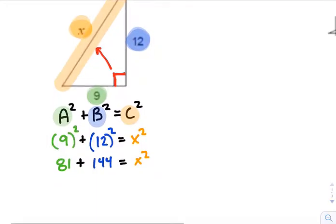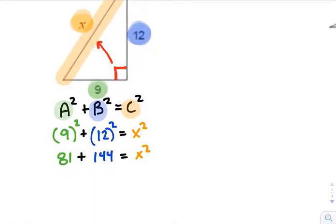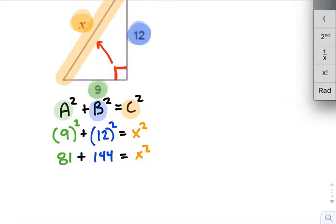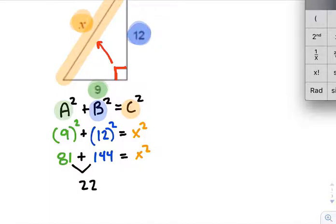9 squared, that's going to be 81. 12 squared, 12 times 12 is 144. X squared, we haven't done anything yet, so we'll go ahead and bring that down. We're going to add together here, and that's still going to be equal to X squared. Now from this point forward, if you got it this far, you're in good shape. All you have to do is carry out, finish solving the equation. So we have to add 81 plus 144. That's going to be 225.